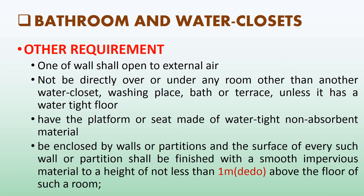Other requirements for bathrooms and water closets: at least one wall shall open to external air. A bathroom or water closet shall not be directly over or under any room other than another water closet, washing place, bath, or terrace, unless it has a watertight floor. The platform or seat shall be made of watertight non-absorbent material. The enclosing walls or partitions shall be finished with a smooth impervious material to a height of not less than 1 meter above the floor.